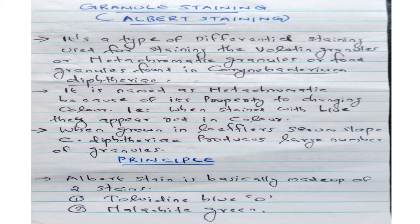Corynebacterium diphtheriae is known as bacterias. These metachromatic granules are found in the organism. It is named metachromatic because of its property of changing color — when stained with blue, they appear red in color. That is the metachromatic property. When grown in Loeffler serum slope, Corynebacterium diphtheriae produces a large number of granules.